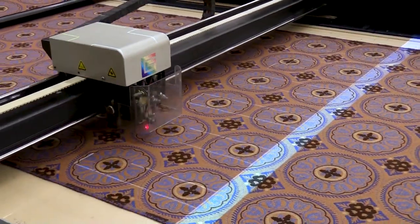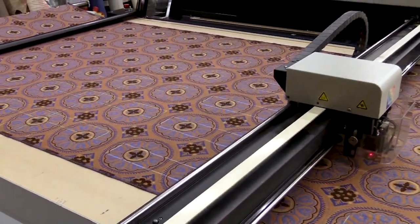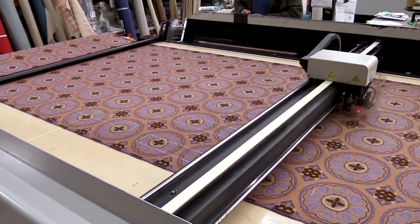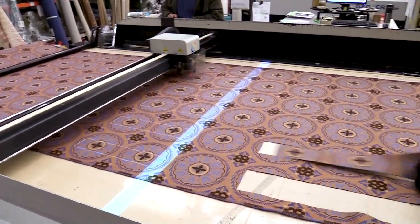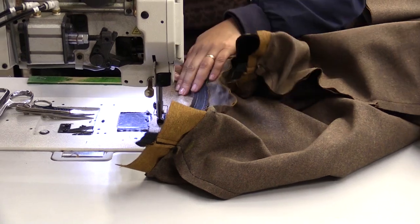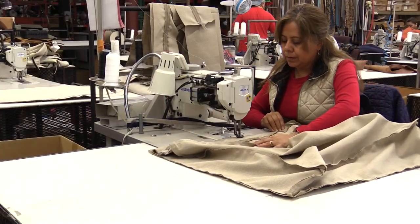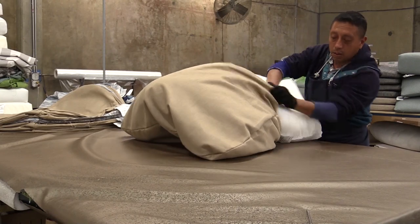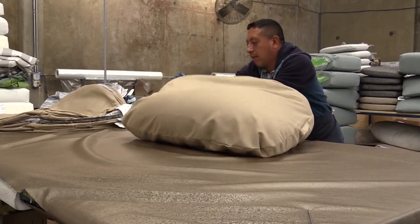Fabric is cut using a high-speed computerized cutting machine, which allows for 100% pattern accuracy and reduces waste. Cushions and pillows are then hand-sewn, providing the strongest seam available and assembled by hand, fitting the outdoor foam or pillow into the cover.